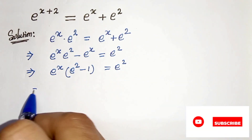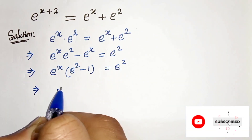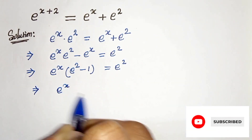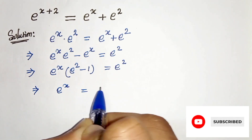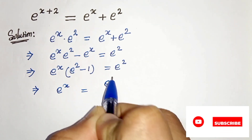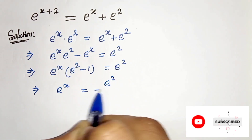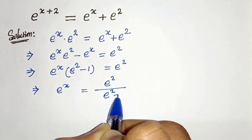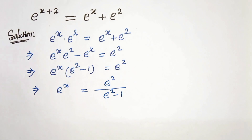In the next step, we can write e to the power x as equals to e to the power 2 divided by e to the power 2 minus 1.